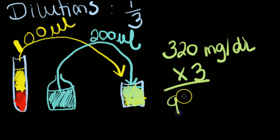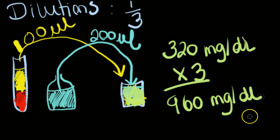And that would be, for example, 960 milligrams per dL for your final result.